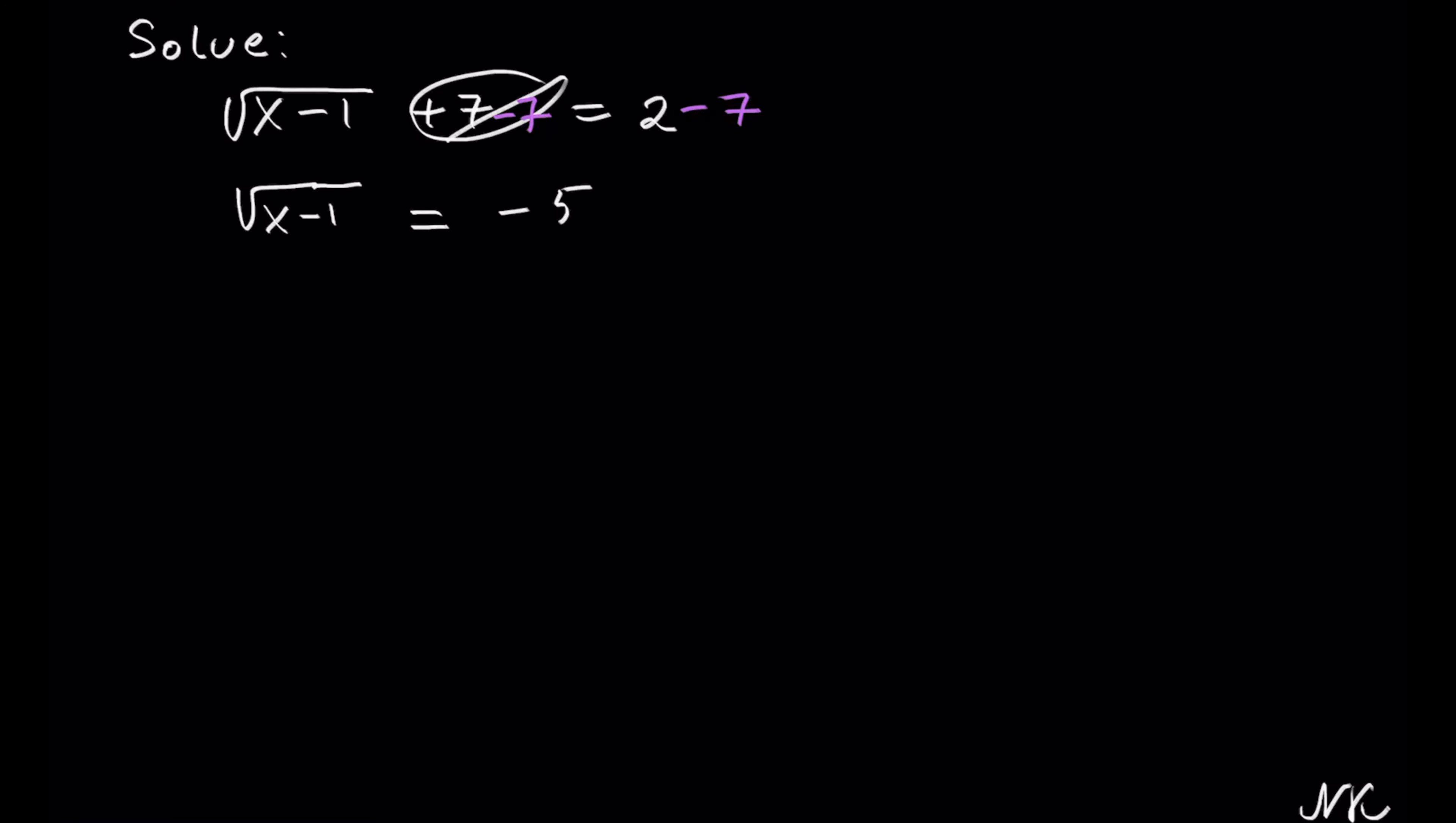On this step, we can do the inverse of a square root, which is a square. So let's raise both sides to the second power. Square root of x minus 1 raised to the second power on the left—the square root and the second power will cancel. So we get x minus 1 equals negative 5 to the second power, which is positive 25.